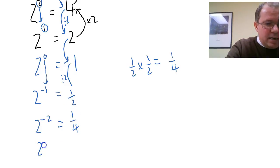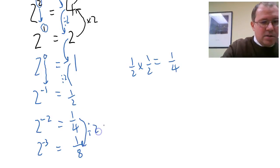And then if we decrease it again, 2 to the power minus 3, we've got 1 over 8 because we're halving the quarter there. So that's one way to think about it in terms of going down.